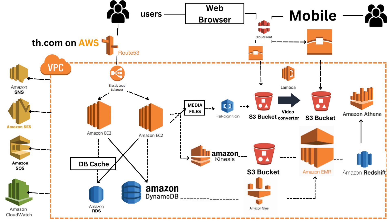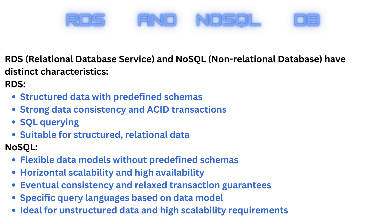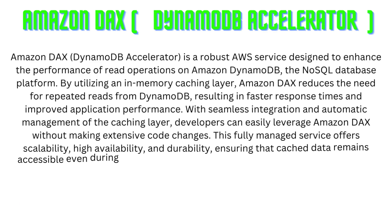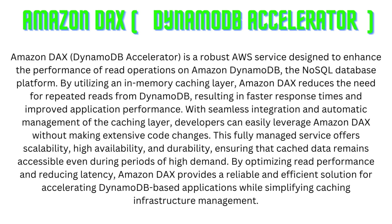For our database, we'll start with Amazon RDS since it offers automated backup, automated software patching, automated scaling, and allows us to easily manage database availability, durability, and performance. As the user base grows, DynamoDB will come into play — we'll use this NoSQL database for its scalability and ability to handle high traffic loads. For low latency, we'll also implement DAX, a cache designed specifically for DynamoDB. Placed between the application and the database, this cache engine will enhance performance by caching frequently accessed data, reducing latency, and improving response time.